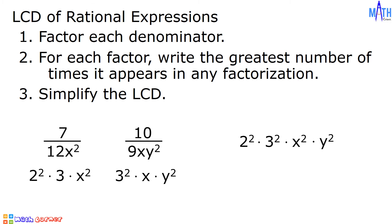The greatest number of times x appears is twice, and the greatest number of times y squared appears is once. So the LCD is 2 squared times 3 squared times x squared times y squared, which equals 36x squared y squared. And this is the LCD.